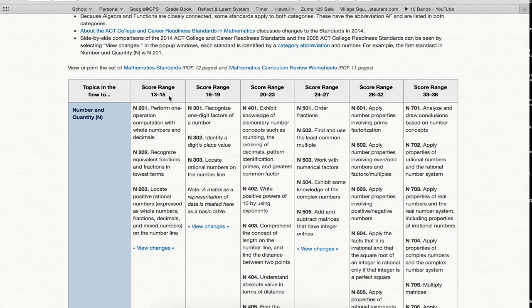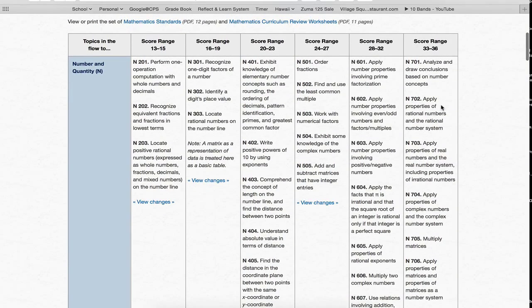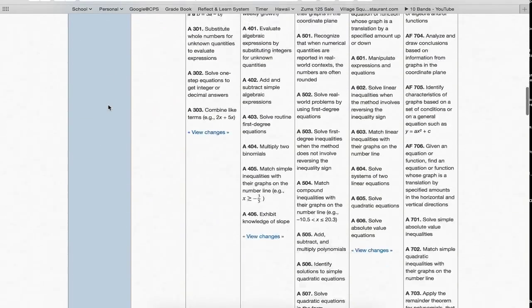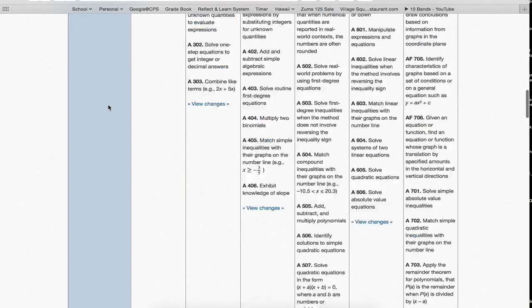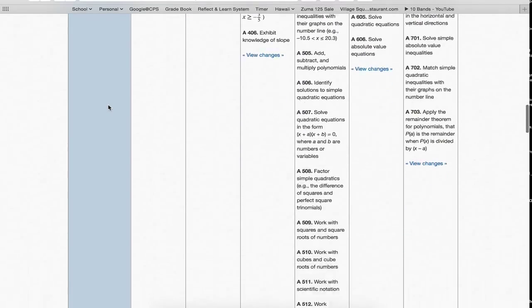Score range 13 through 15 are the easiest questions that might show up there, and score range 33 through 36 are the hardest questions that show up on the test. So each standard is also broken down by category. This is number and quantity. There's algebra, which is a lot. Like I said, 50% of the test is about algebra.